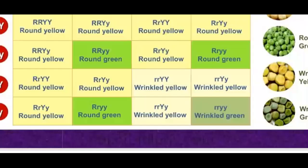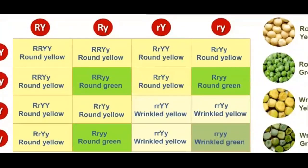Hello students, so we were discussing about the dihybrid cross. In the dihybrid cross we saw that there are 4 different kinds of gametes in both the parents and the offsprings are formed in the ratio of 9:3:3:1 — 9 for the dominant character. Let us see about all these characteristics in the next slide in written form.